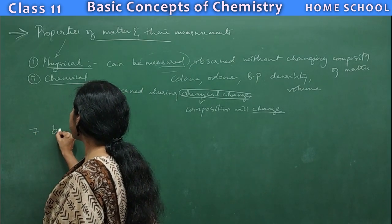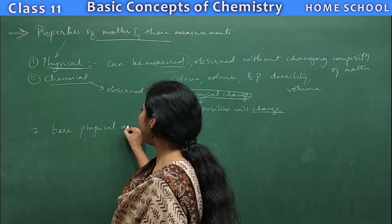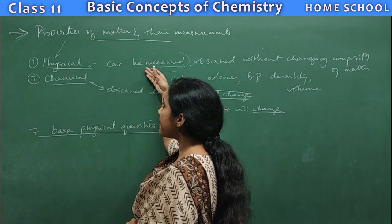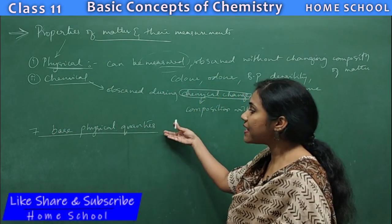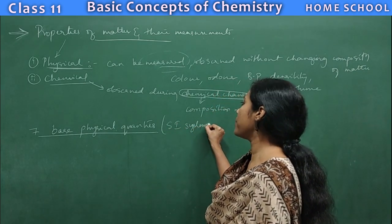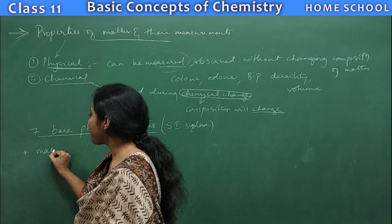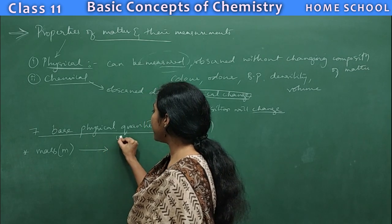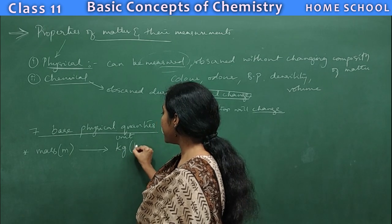Why are we learning these seven base physical quantities? Because all the physical properties that we are going to measure about matter will fall under these seven base physical quantities introduced by the SI system of measurements. The first one is mass, indicated with the letter M, and its unit is kg — kilogram.